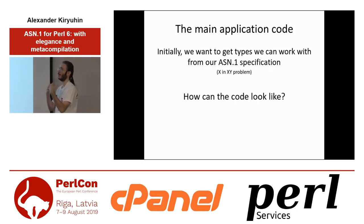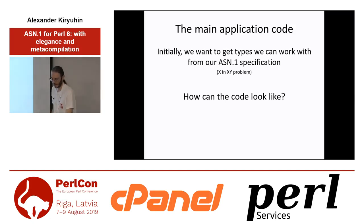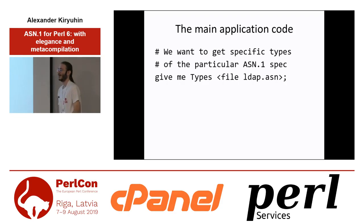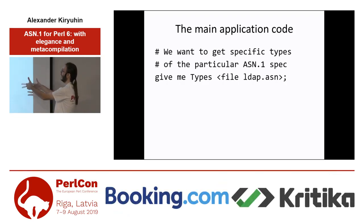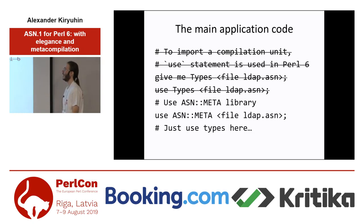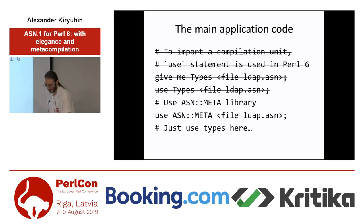So let's look at it from the user side of the syntax. What does the client want to do — just work with types? Like, give me types and I will do something with them. Of course this is not real code because we don't have abstract types, we have types from a specification — for example LDAP.ASN, it can be anything you want. And of course in Perl 6 we have a use statement, not 'give me'. And actually our module is called ASNMeta, and with this statement you can just use generated types.